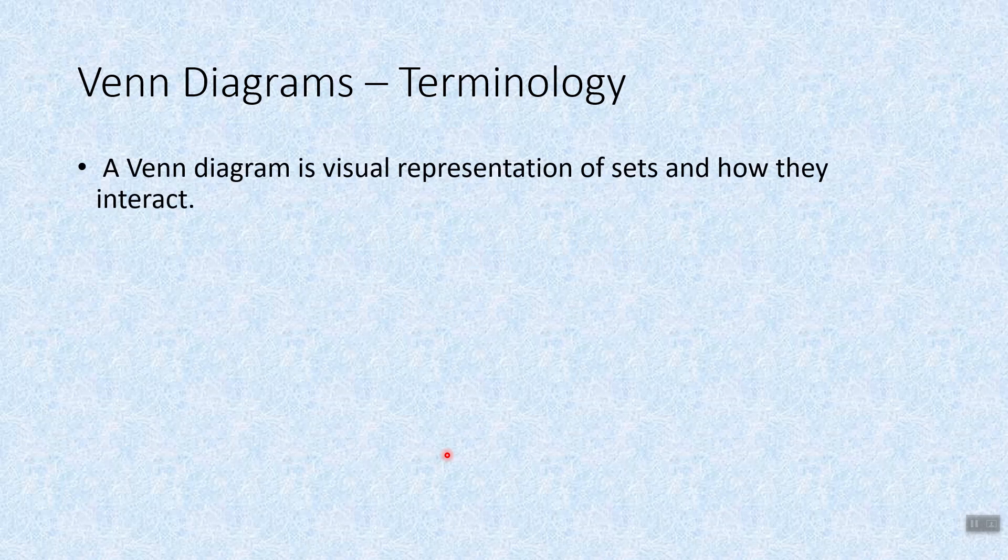So Venn Diagrams, let's look at some terminology. A Venn Diagram is a visual representation of sets and how they interact. It's named after John Venn, hence the capital Venn Diagrams.